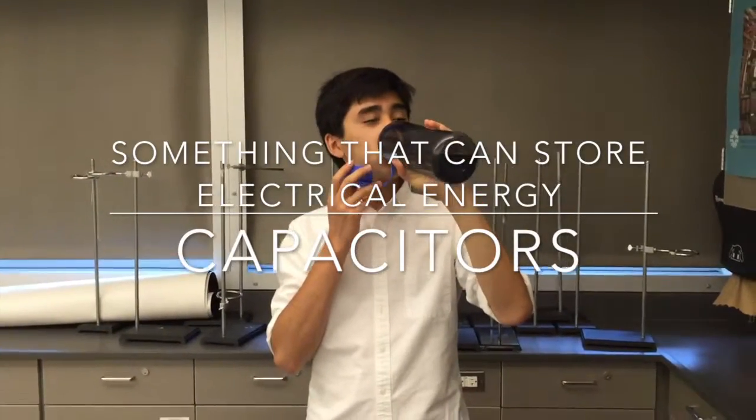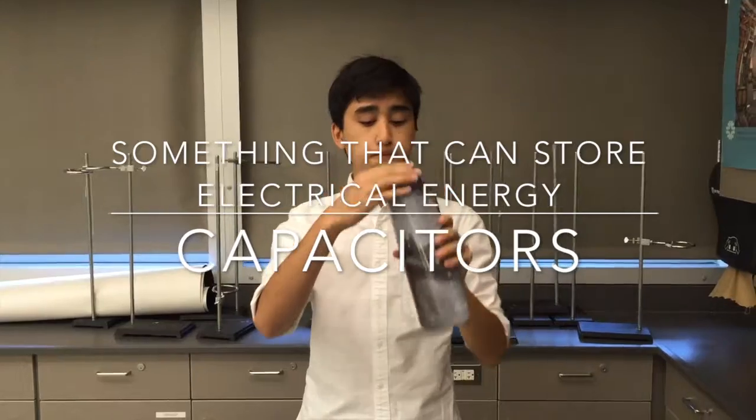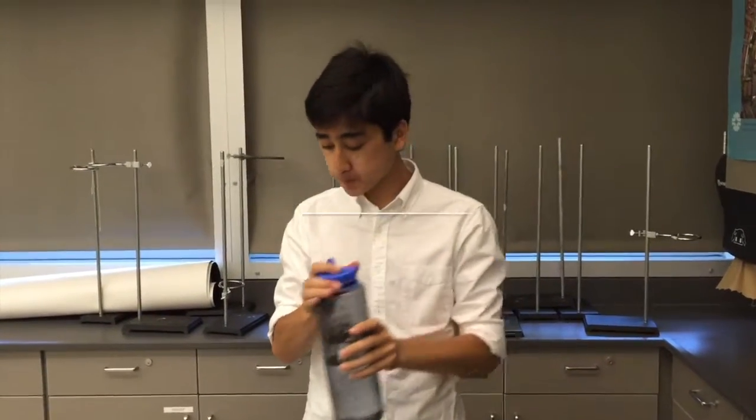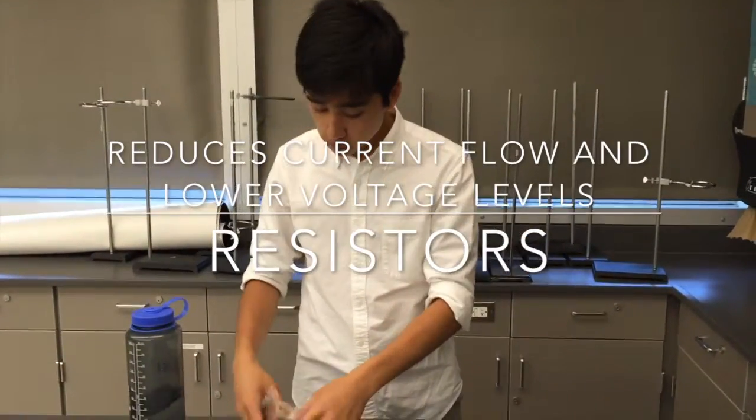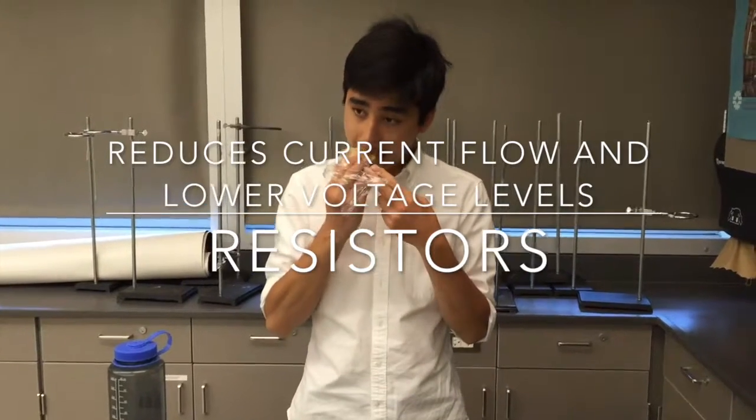A capacitor is something that can store electrical energy. This is not like a battery because capacitors rapidly release energy. A resistor, on the other hand, reduces current flow and lowers voltage levels.